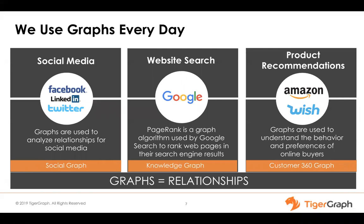Social media — we also know them as social graphs: Facebook, LinkedIn, Twitter. These graphs are used in these companies to analyze relationships in social media. We all remember that famous cliché that everybody is connected to everybody else in the world five hops down the line in LinkedIn. Similarly, website search — Google is built on a PageRank algorithm, and this PageRank algorithm is part of graph theory itself.